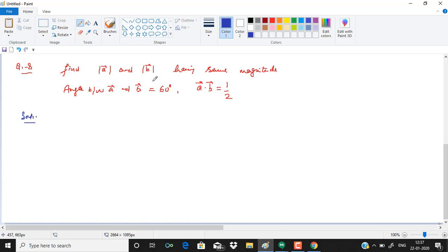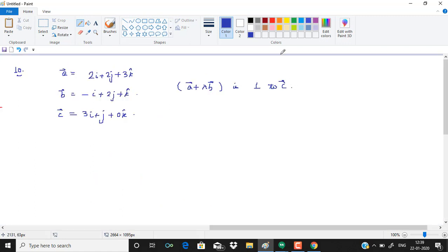In question number 8, we need to find the magnitude of a and magnitude of b. Both have the same magnitude, a dot b is 1 by 2, and angle between a and b is 60 degrees.